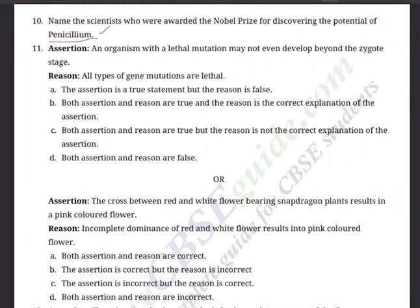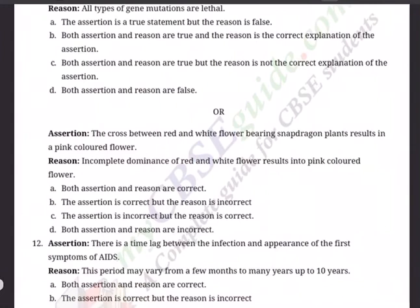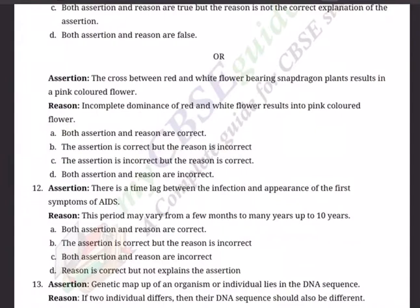Question 11: Assertion-Reason type. Assertion: An organism with a lethal mutation — mutation is a sudden change — may not even develop beyond the zygote stage. Reason: All types of gene mutations are lethal. That is not correct. Options: A) Assertion is true but reason is false. B) Both assertion and reason are true and reason is the correct explanation. C) Both assertion and reason are false. D) Both assertion and reason are false.